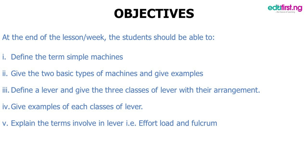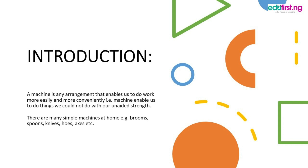What is a machine? It is any arrangement that enables us to do work more easily and conveniently. Machines enable us to do things that we could not do with our unaided strength. Some examples of simple machines in our homes are brooms, spoons, knives, and others.